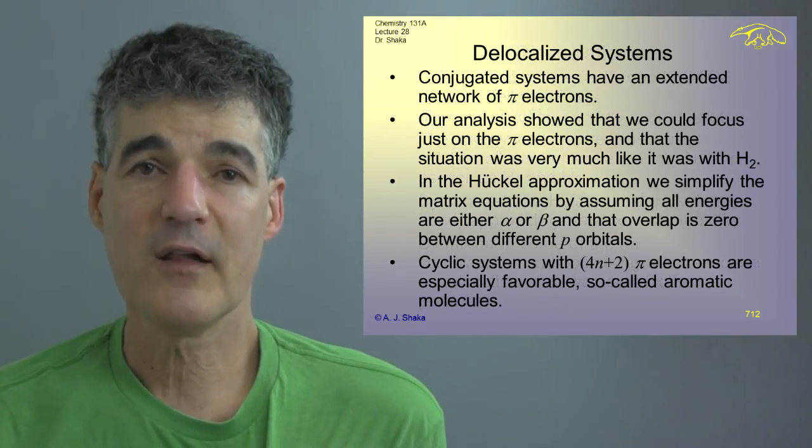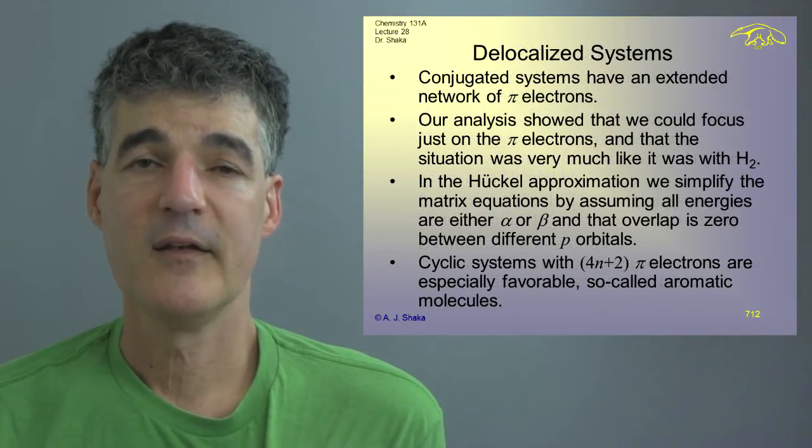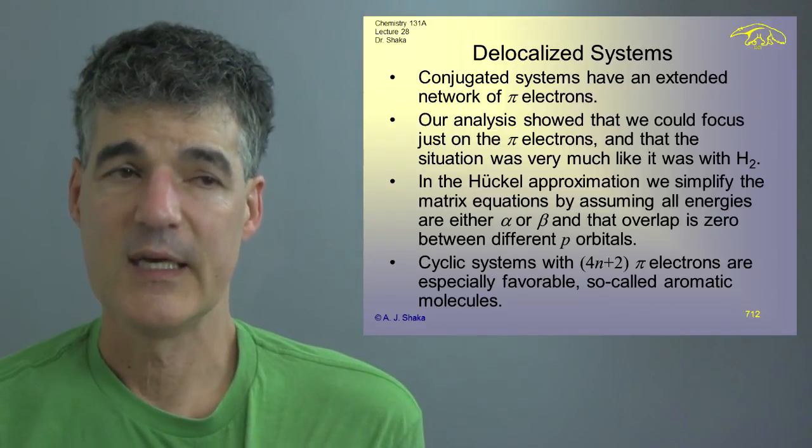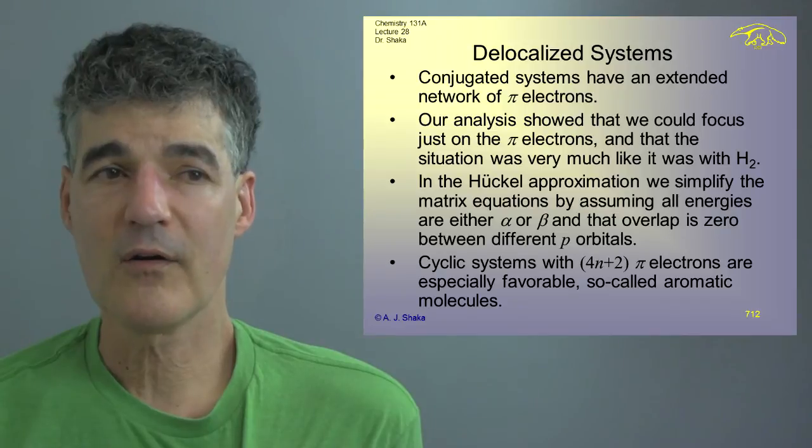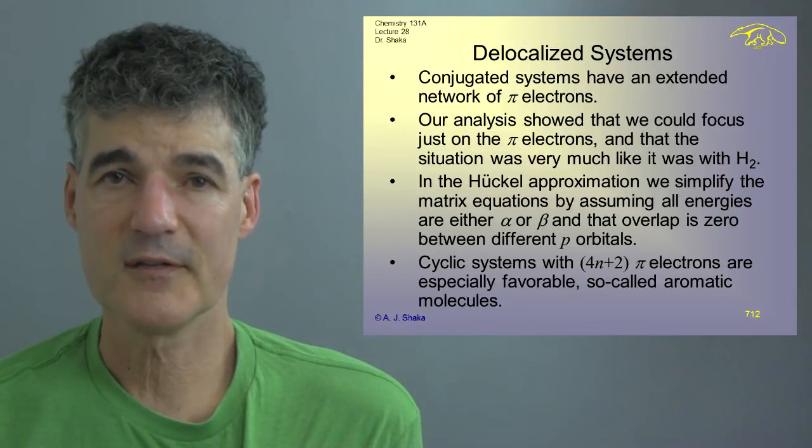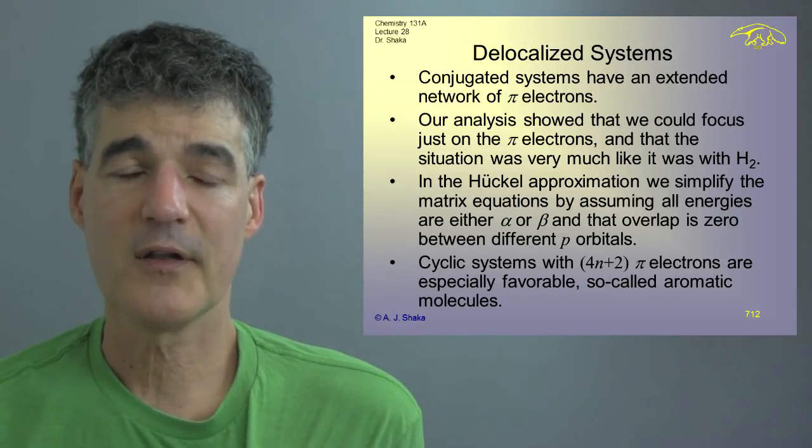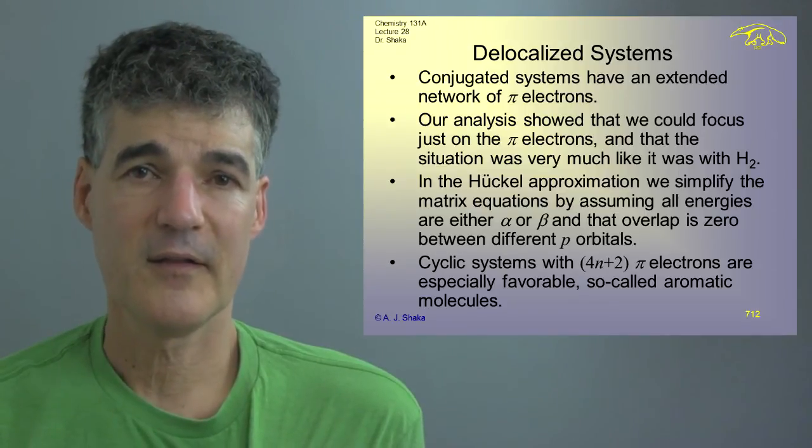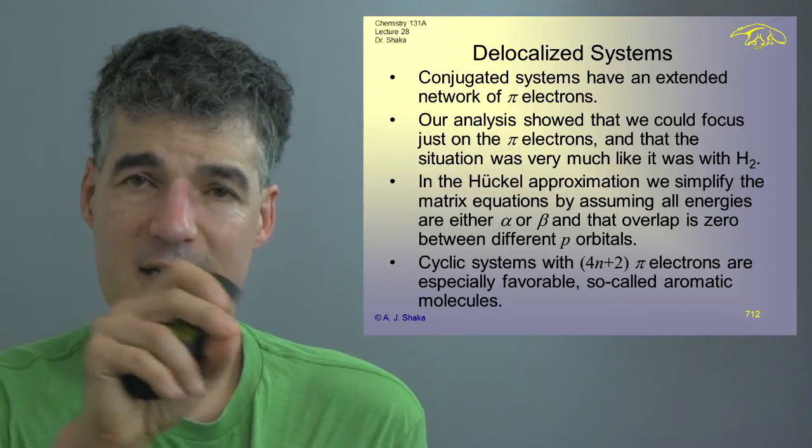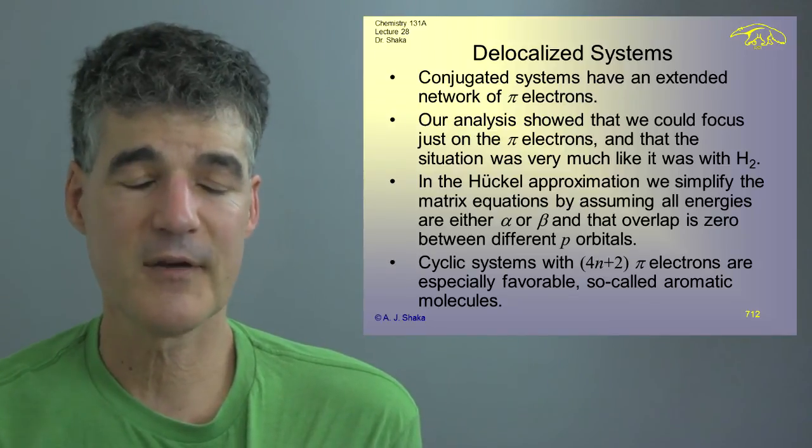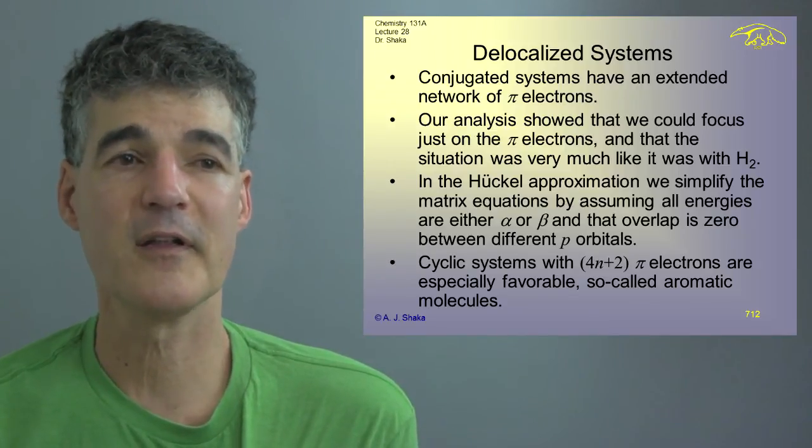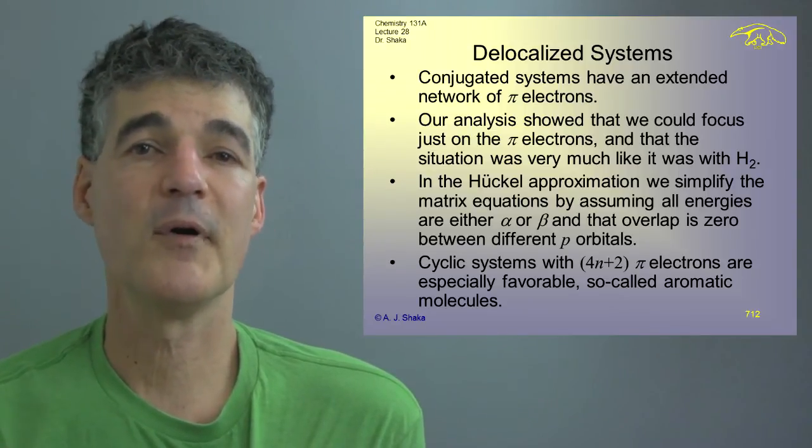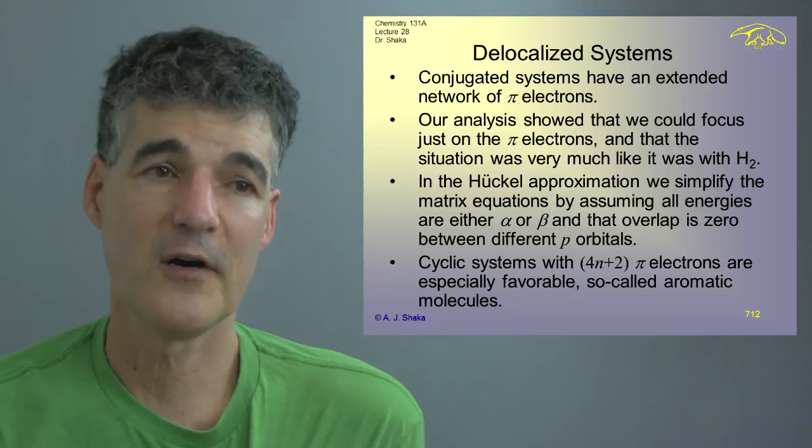And then finally, we closed by talking about delocalized systems of electrons, pi systems. I think all organic chemists think of these kinds of so-called aromatic systems in terms of molecular orbitals. We draw alternating single and double bonds, but chemists never think of them that way. They think of a delocalized pi system because the alternating single and double bonds doesn't predict the chemistry at all.